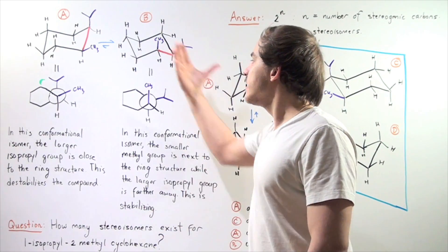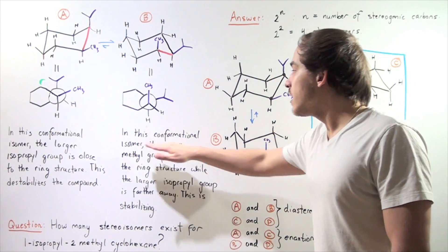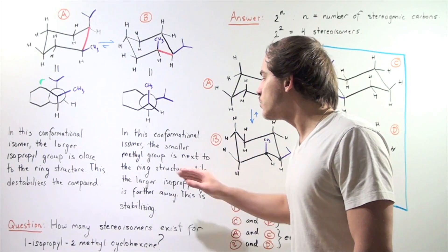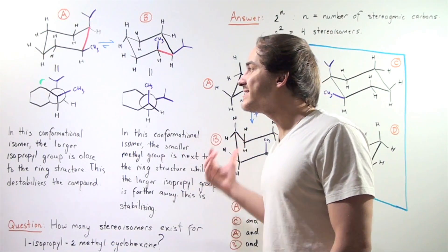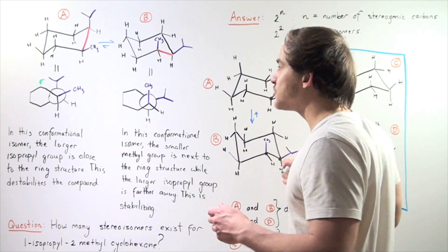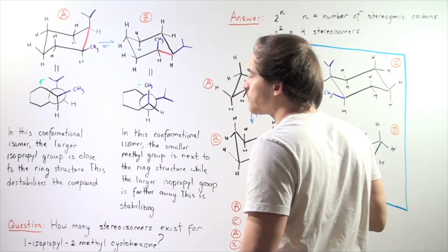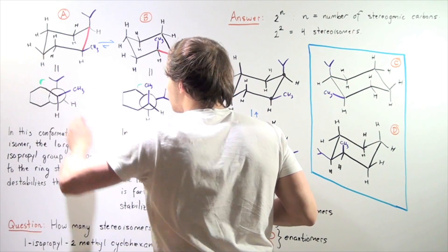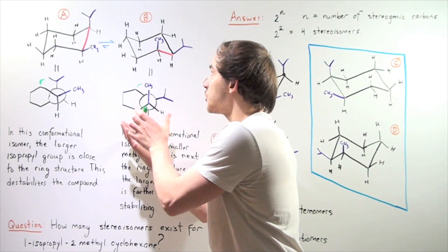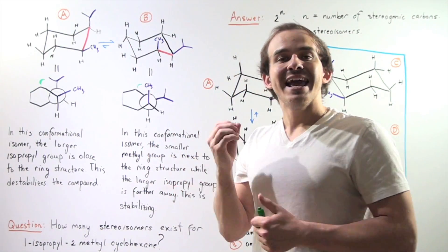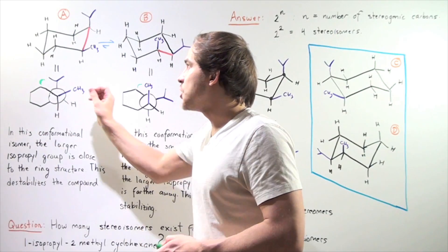Now let's examine conformation B. In this conformational isomer, the smaller methyl group is next to the ring structure, while the larger isopropyl group is farther away. This is relatively stabilizing, because the smaller methyl group will not bump as much with our ring structure as the larger isopropyl group does. The conclusion is that chair conformation B is more stable — it's lower in energy — than chair conformation A.